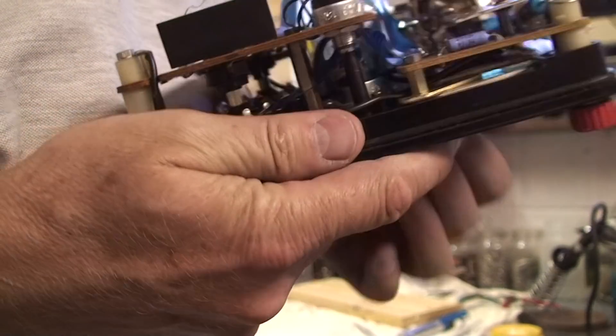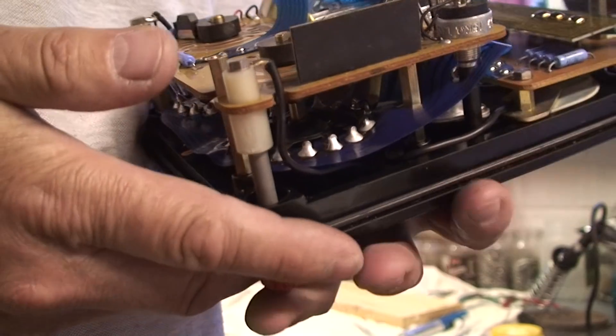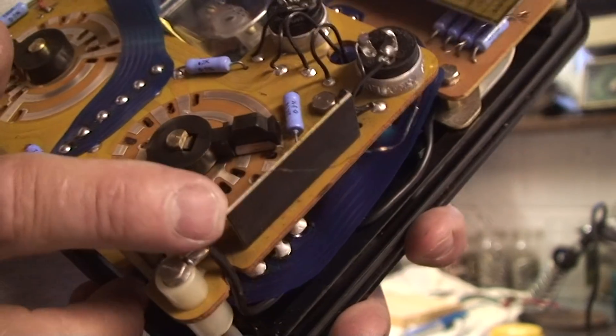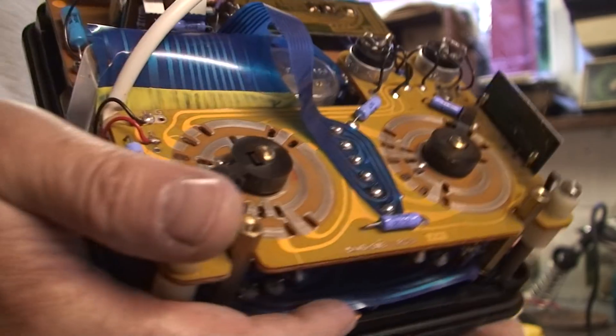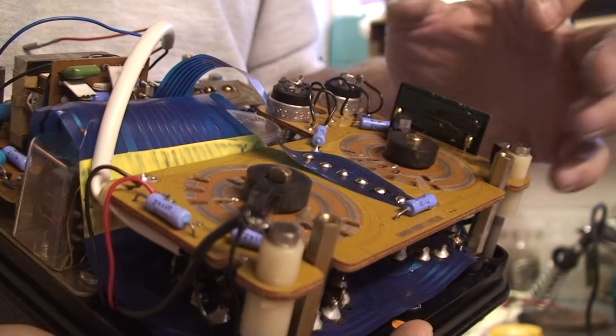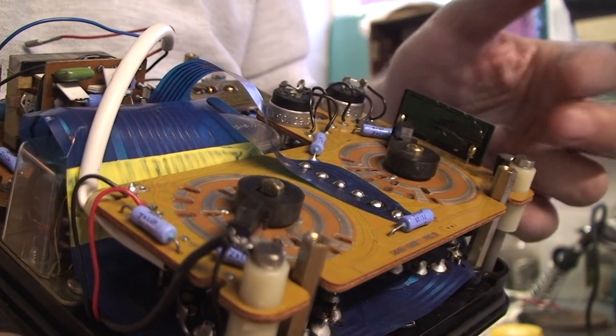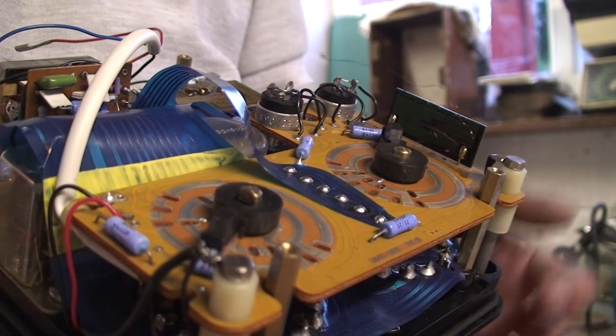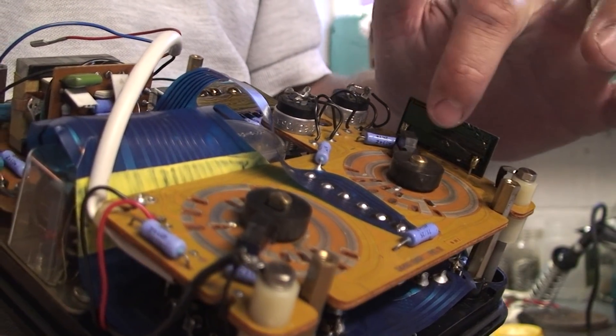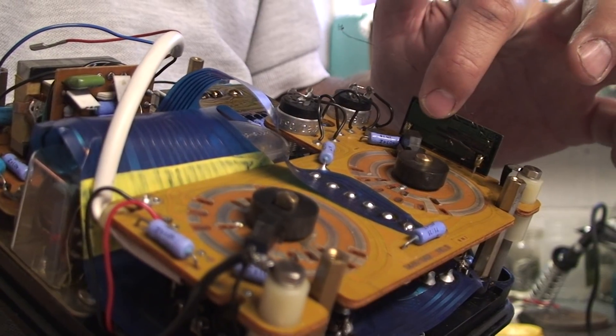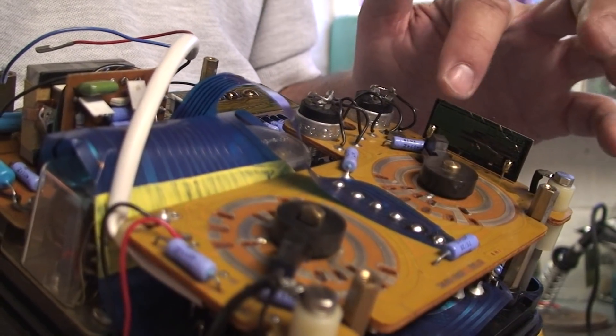The weakest resistor is the 18.4 ohms. That's this one if you look. This is the 18.4 ohms, a bit of wire there. This burned out completely. This 18.4 ohm resistor is also connected to this 2K resistor.